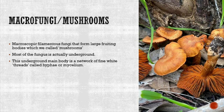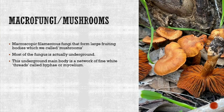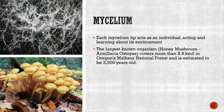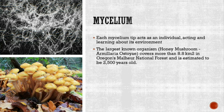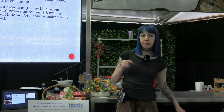Macro fungi — mushrooms — is mainly what I'm going to talk about. They are macroscopic filamentous fungi that form large fruiting bodies. Most of the fungus is actually underground; the mushroom you see is only the reproductive organ. This underground main body is a network of fine white threads called hyphae or mycelium. The largest known organism, the honey mushroom, covers more than 8.8 square kilometres in Oregon and is estimated to be two and a half thousand years old — also a parasitic fungus nicknamed the forest killer.